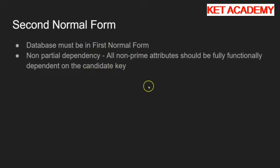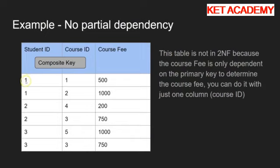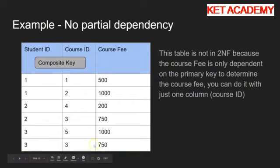It sounds a bit complicated, but it's not. We've got a list here of students - the student ID, the course ID that the student is doing, and how much that course costs. Student 1 is doing course ID 1 and that course costs 500. Student ID 2 is doing course 3 and it's 750. Student 3 is also doing course 3 and it's costing 750. What's the problem with this table?